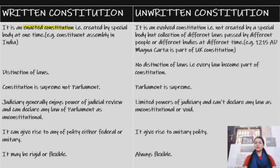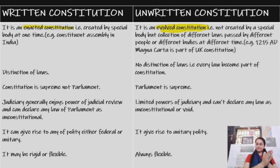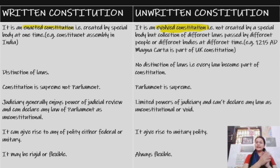An unwritten constitution is an evolved constitution — it is not created by a special body, but is a collection of different laws passed by different people or bodies at different times. It is not formed at a single point in time.